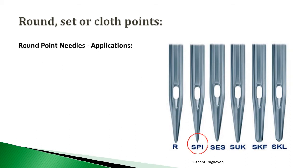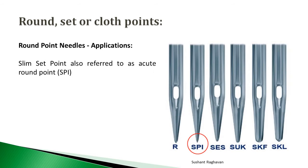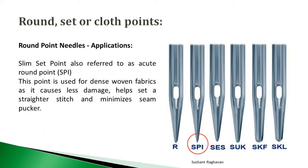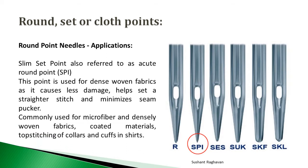Slim set point, also referred to as acute round point SPI: this point is used for dense foam fabrics as it causes less damage, helps achieve a straighter stitch, and minimizes seam pucker. It is commonly used for microfiber and densely woven fabrics, as well as coated materials, and for stitching off collars and cuffs in shirts.